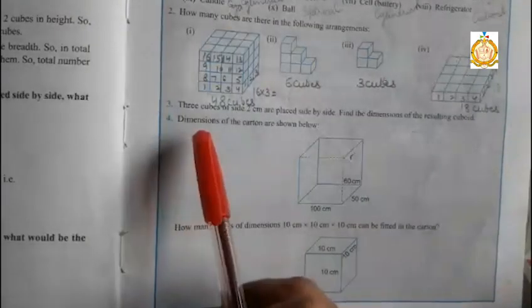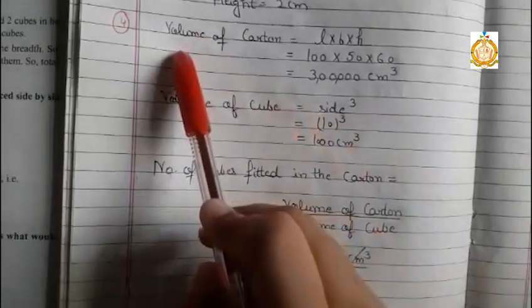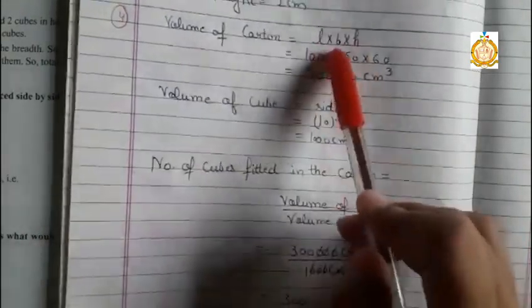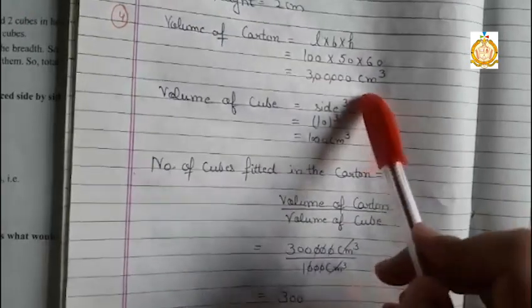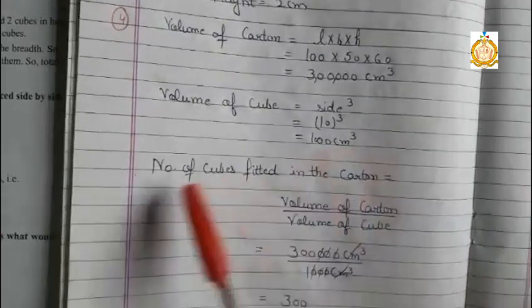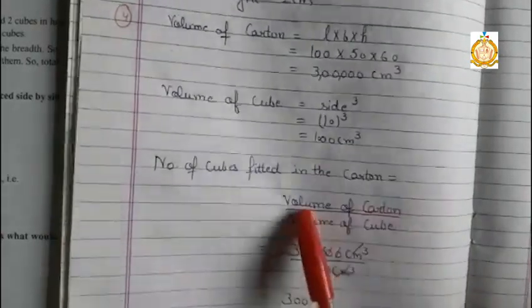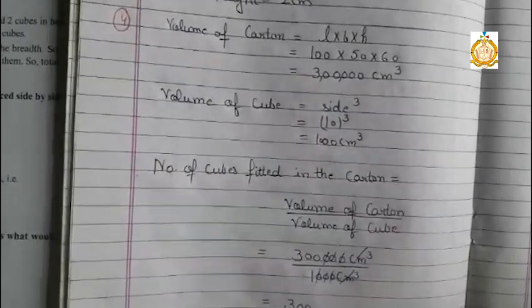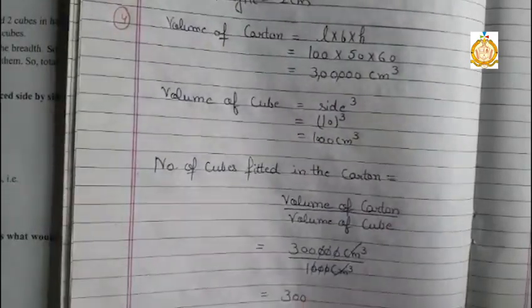Dimensions of a carton are given below: length, breadth, and height. And next is the cube. Cube side is also given. Cube having all the sides are equal, that is, each side is 10 cm. We have to find out how many cubes are fitted in a carton. First, find out the volume of carton: length into breadth into height. It becomes three lakh. Find out the volume of the cube, side cubed, that is thousand centimeter cube. Number of cubes fitted in a carton equals volume of carton over volume of cube. That means three hundred cubes are fitted. Thank you.